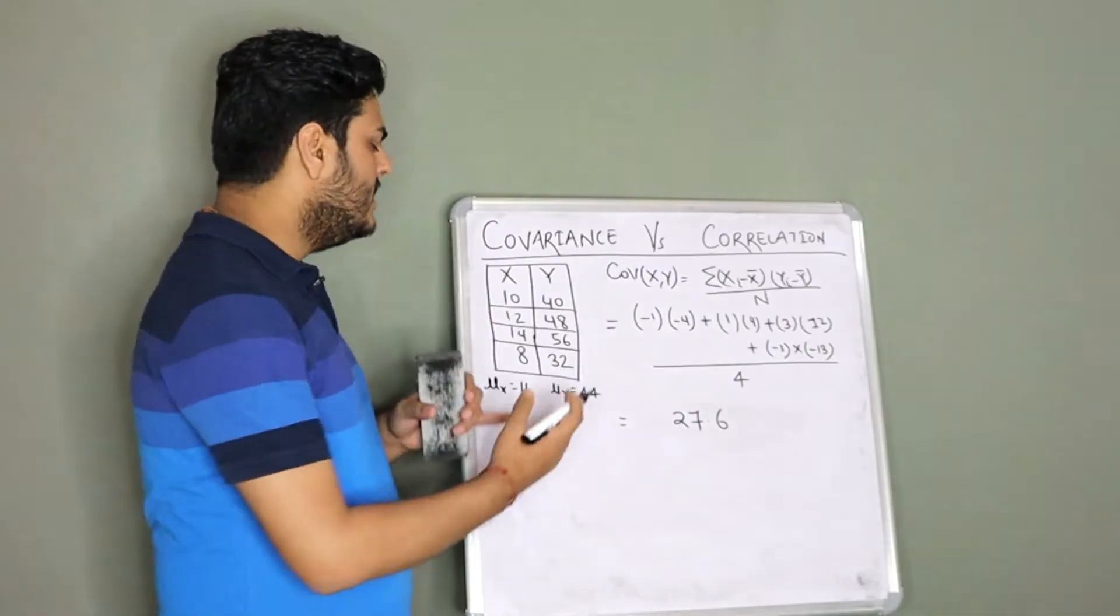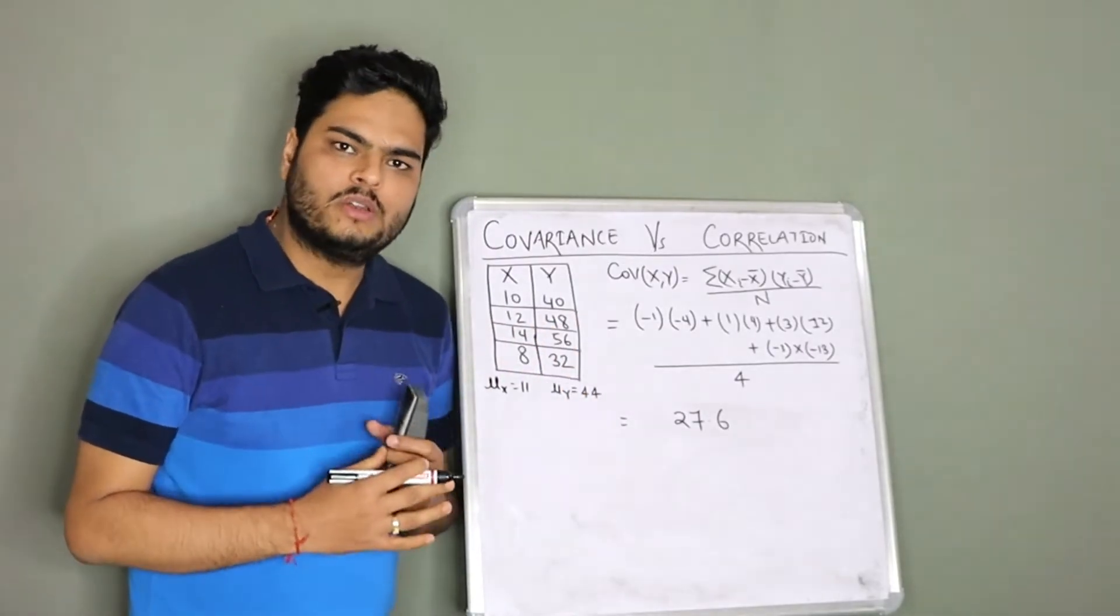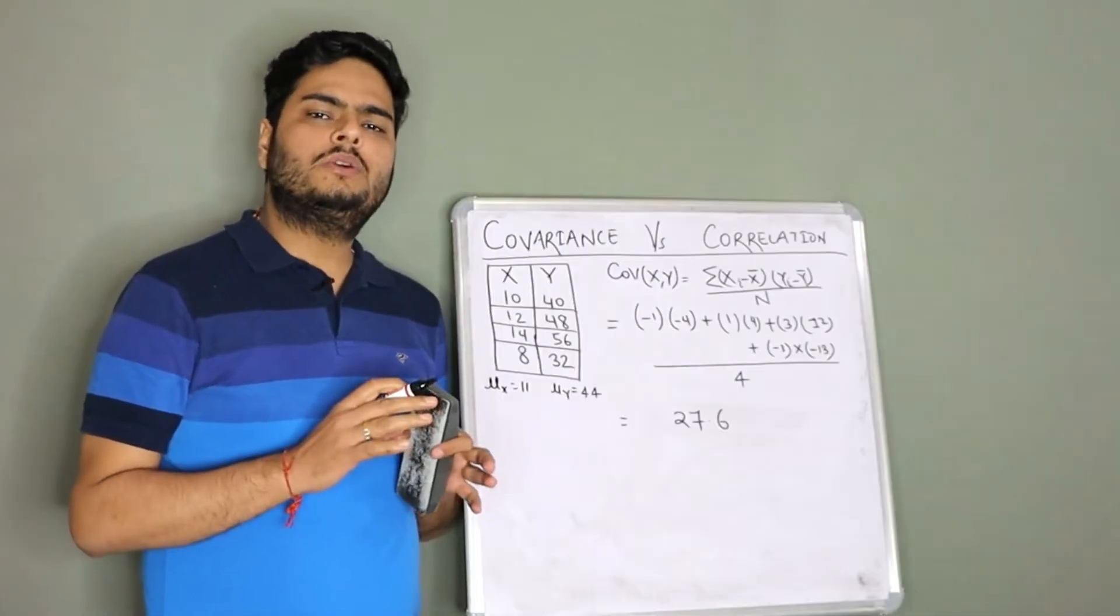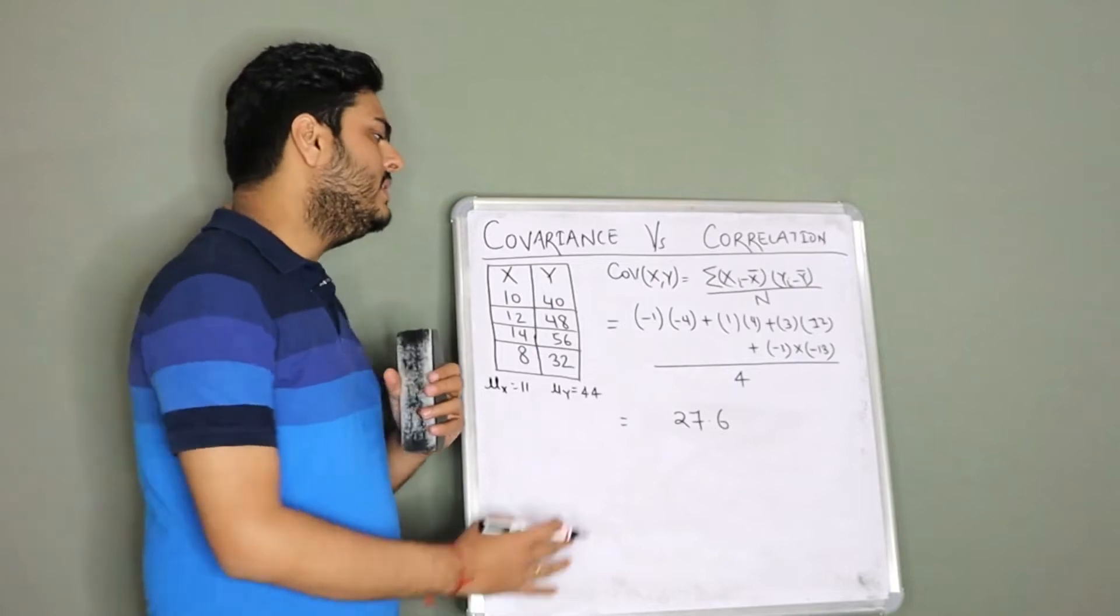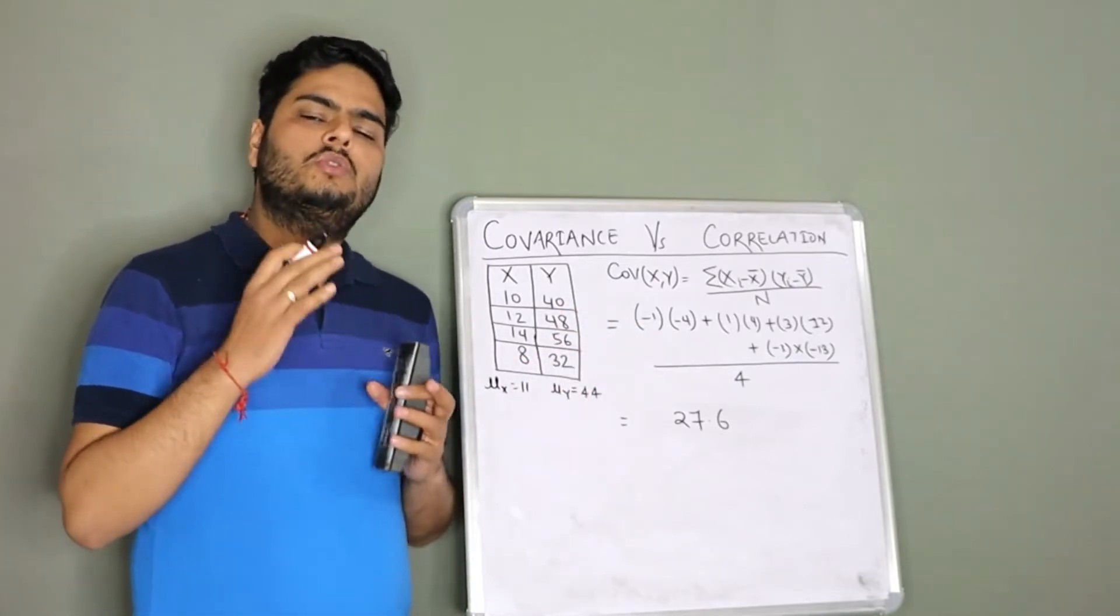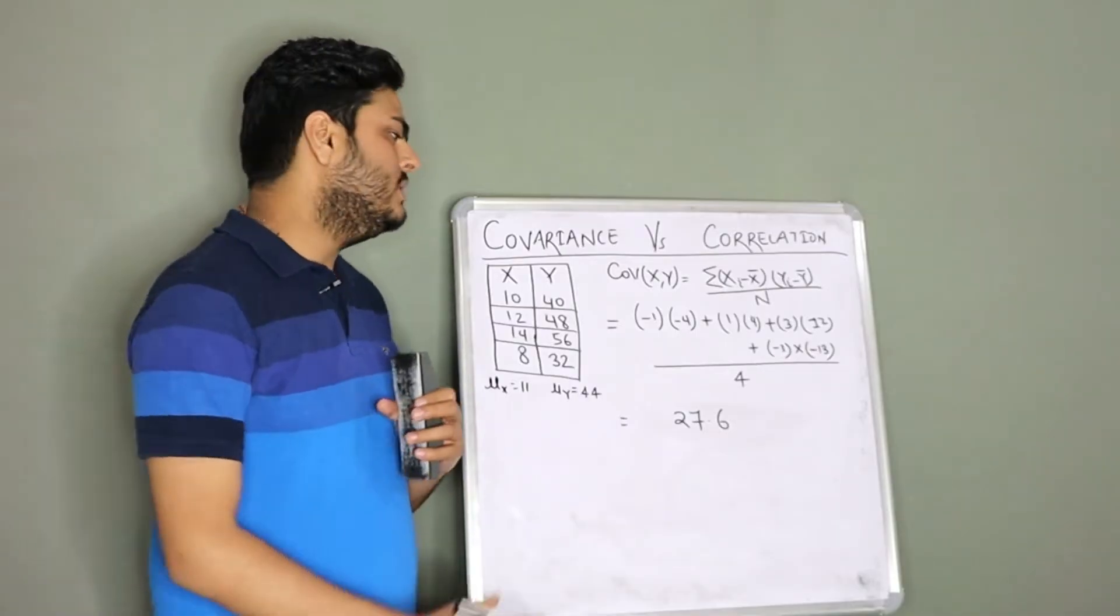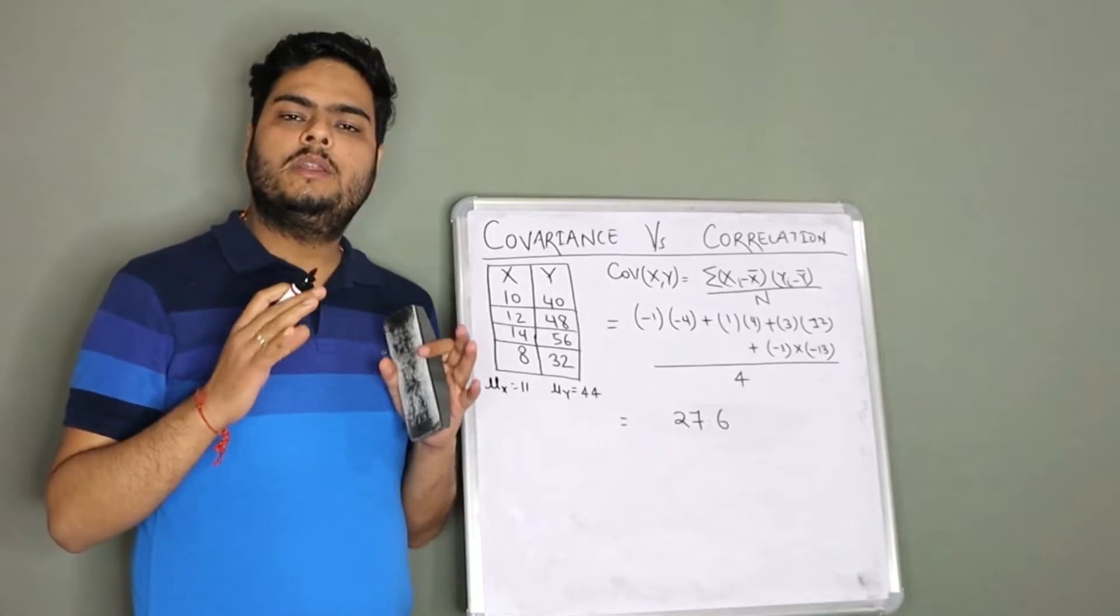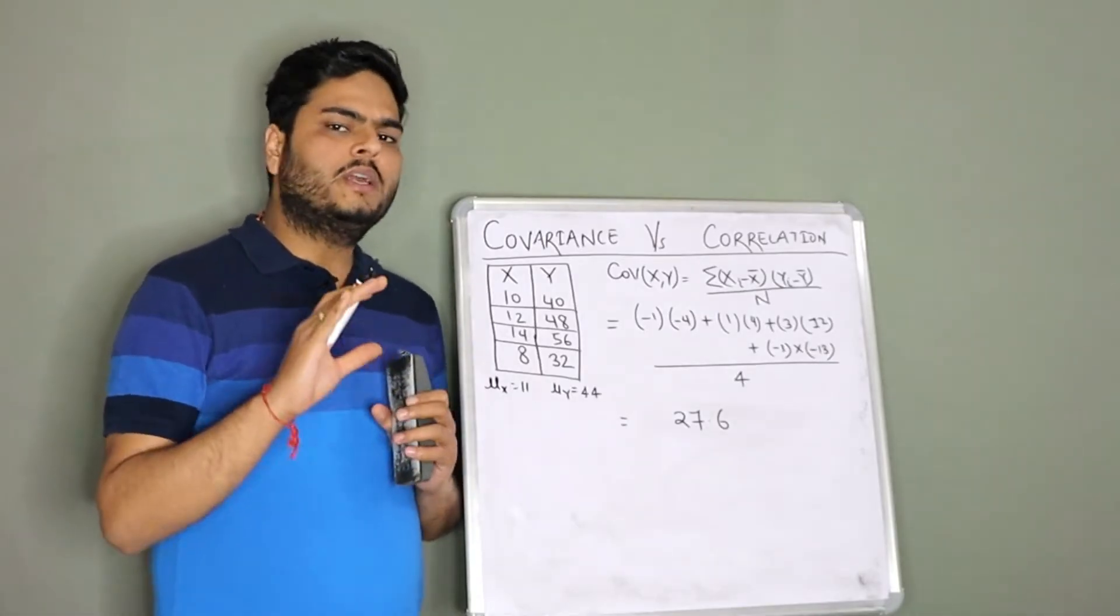One such term is covariance and correlation. I am going to take a small data set and explain what is covariance and what is correlation. This is a fundamental concept which should be absolutely clear to you and also a favorite interview question for many data science interviewers. Ensure you watch the video till the end and then you will be able to explain correlation and covariance on pen and paper without any tools.